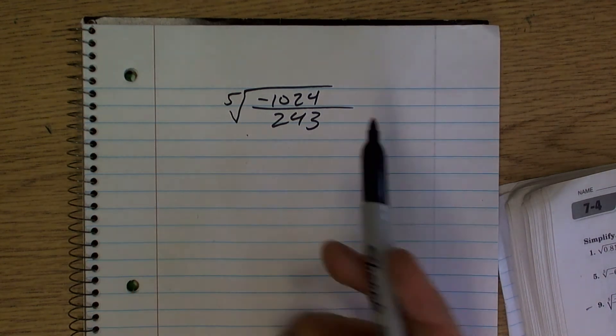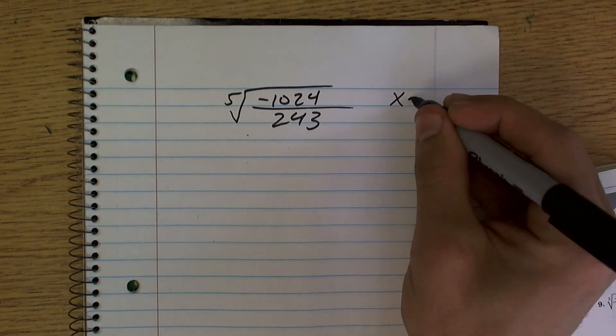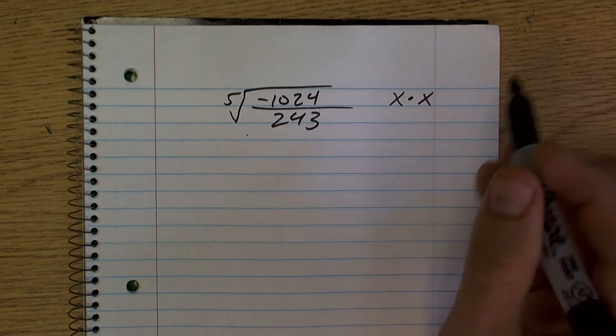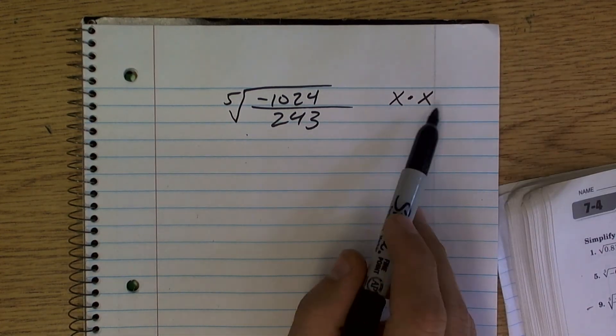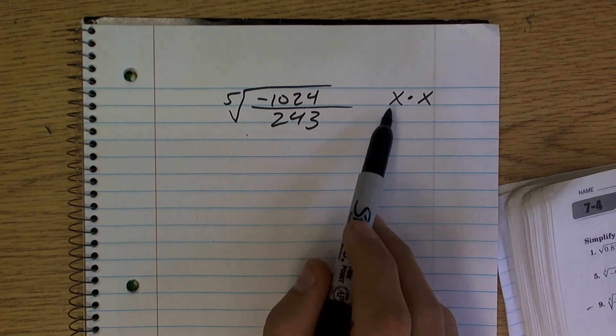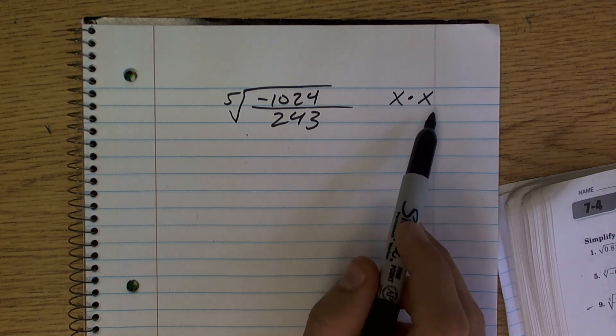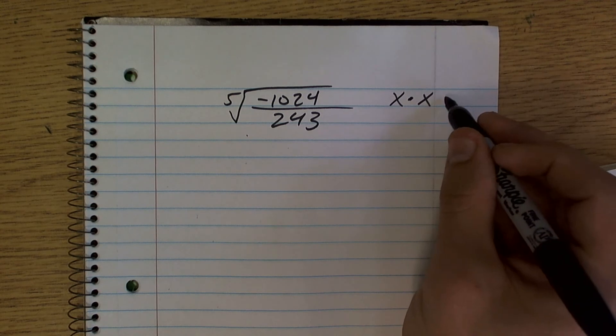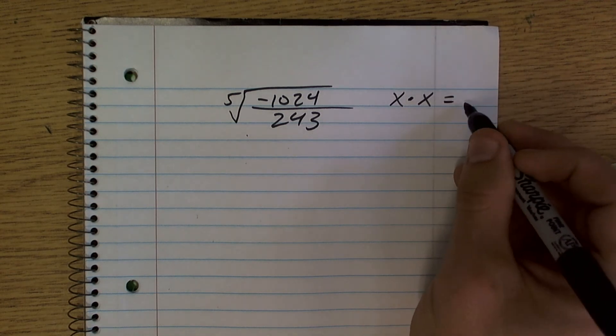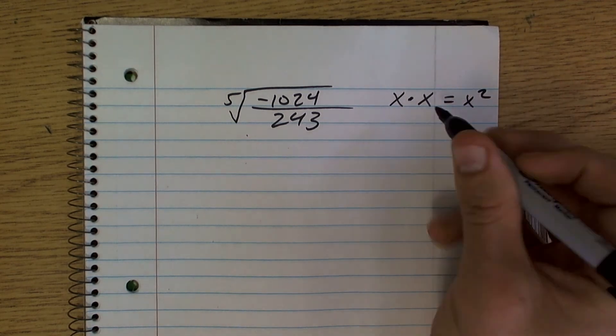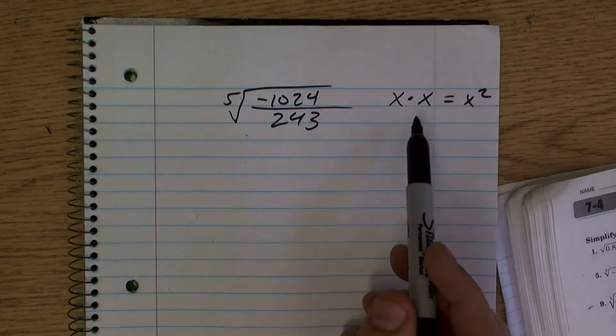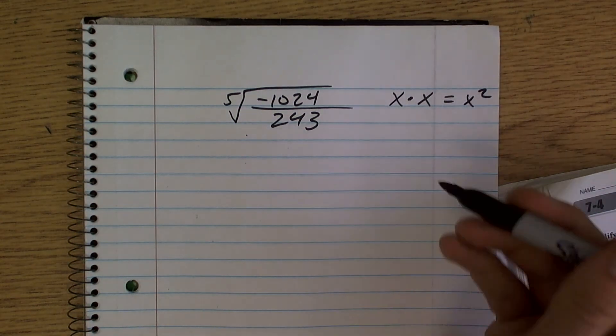That only works for even roots. The reason we can't take the square root of a negative number is because there's no two same numbers that multiply to make a negative. x times x always equals a positive x squared, and same thing with negative x times negative x - it always gives you that positive x squared.